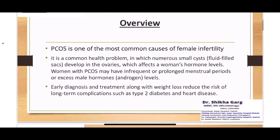It's the most common cause of female infertility. It's the most common health problem in which there are numerous small cysts or fluid-filled sacs that develop in the ovaries, and thus it affects women's hormonal levels. There may be many symptoms, specifically menstrual symptoms and excessive male hormones and androgen levels.